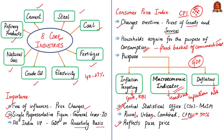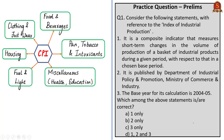The six components of CPI include food and beverages, pan tobacco and intoxicants, clothing and footwear, housing, fuel and light, and miscellaneous — which includes health, education, transport, recreation, etc. Out of all, food and beverages has the highest weightage. With this, we come to the end of this article discussion.